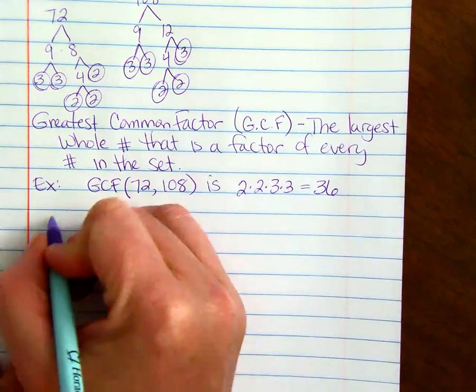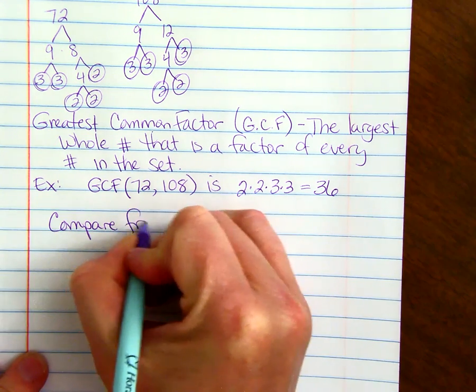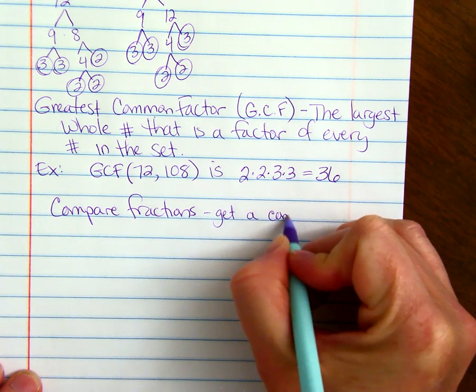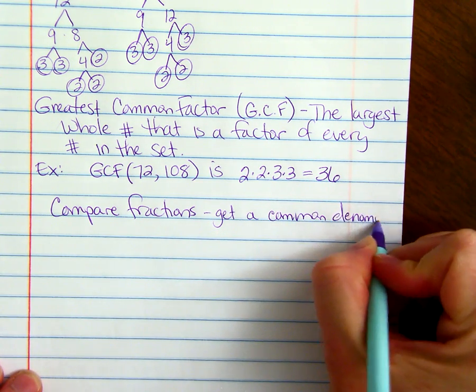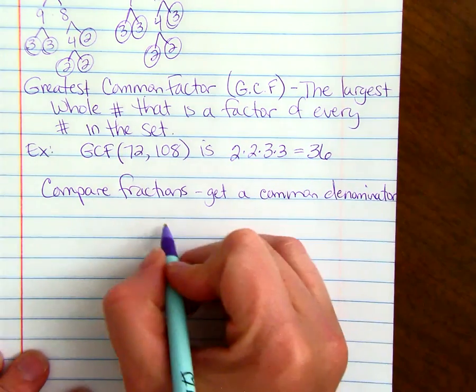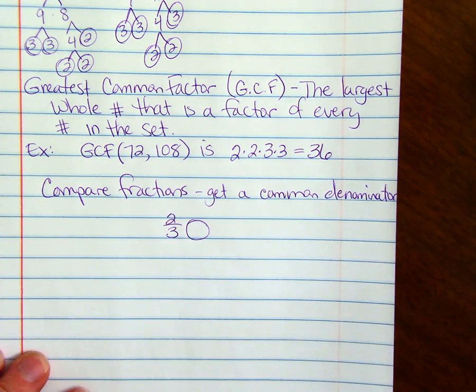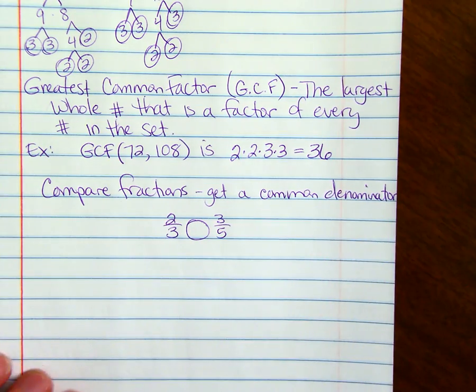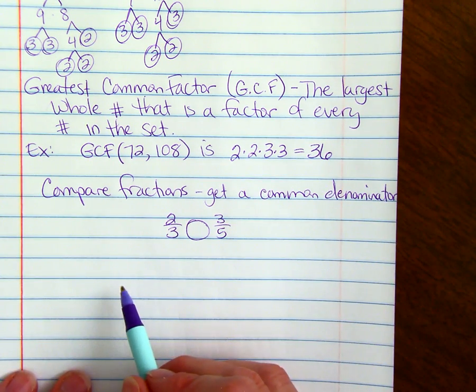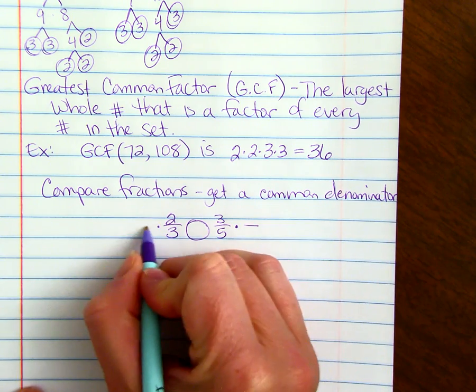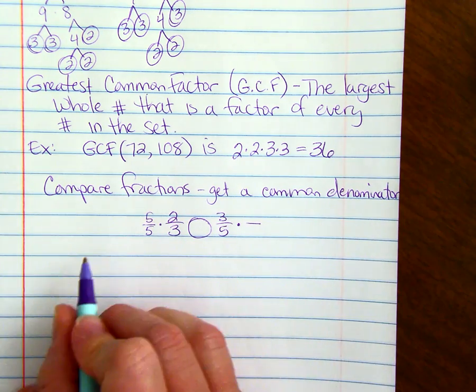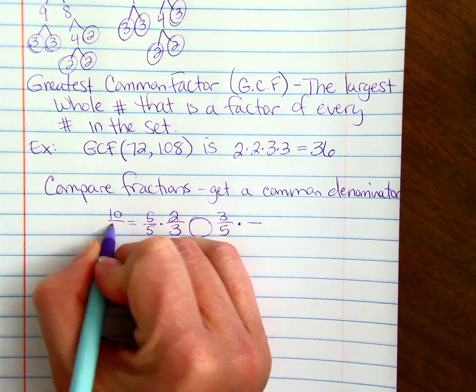If we want to compare fractions, one way is to get a common denominator. Let's say we're comparing 2 thirds and 3 fifths. A common denominator with these would be 15. If we multiply the one on the left by 5 over 5, we're just multiplying by the number 1 in the form of 5 over 5. We get 10 fifteenths.